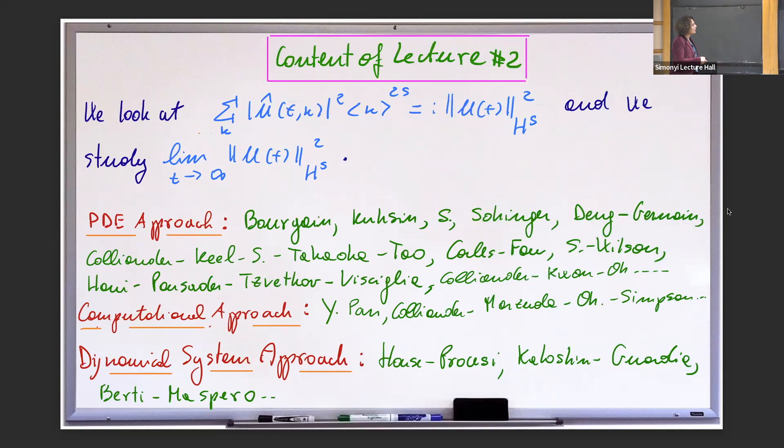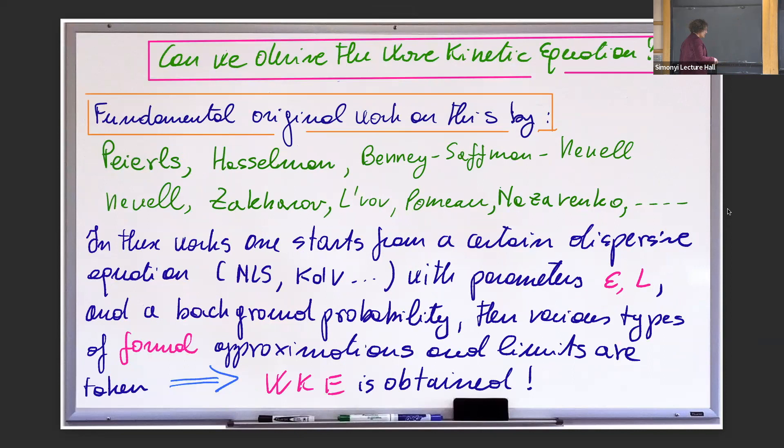We look at the limit as t goes to infinity — for this equation it's reversible, so also t goes to minus infinity. So that was yesterday, to compare: yesterday there was no probability; today there is a probability. The derivation of the wave kinetic equation was done originally in a formal way. The first signs of these equations came already in the work of Peierls, then Hasselmann, and then many others. In particular today, what I will do for you is the derivation that Nazarenko does for NLS, so that you get to see how you come up with that reduction.